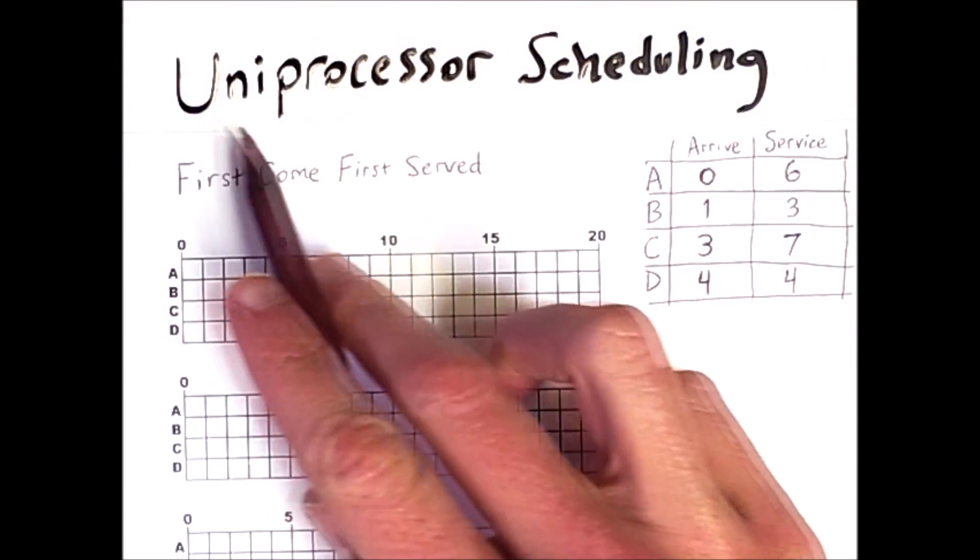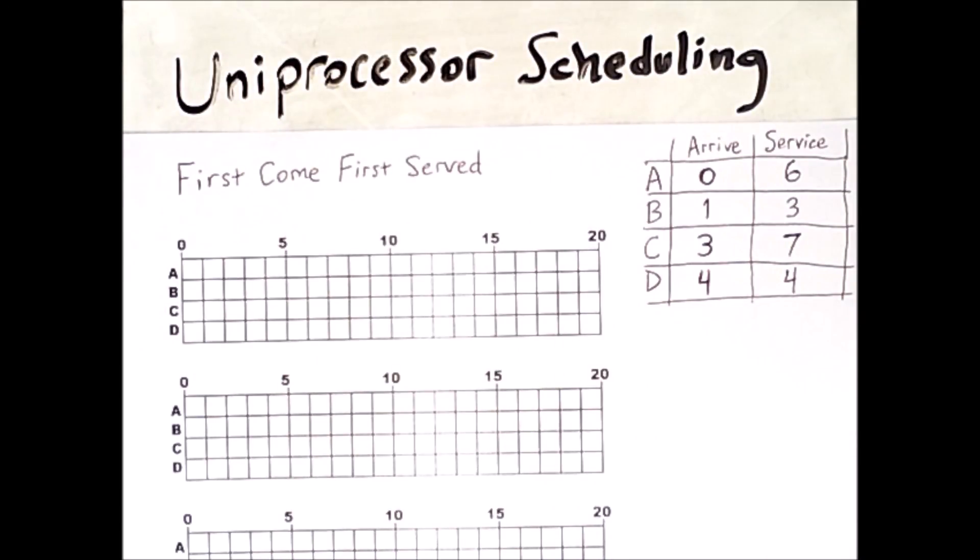This video will discuss uniprocessor scheduling methods, so ways that machines with a single processor schedule which process executes at which time.